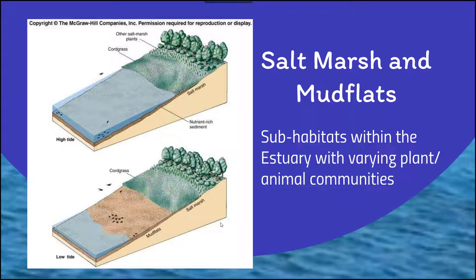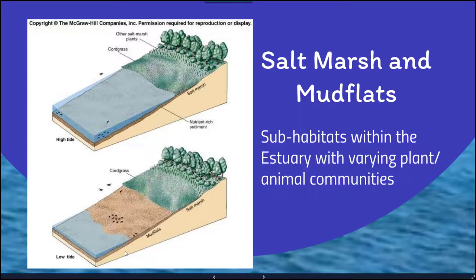Salt marshes and mudflats tend to be sub-habitats within the estuary and within riverine and lacustrine systems. Estuaries vary with respect to plant and animal communities — each individual estuary can have a very unique diversity and assemblage of organisms. In a salt marsh, you have nutrient-rich sediments and water leading up to a section of seagrass and salt marsh plants. In a mudflat, there's a segment between the vegetation area and the waterline consisting of very nutrient-rich mud where many organisms exist.